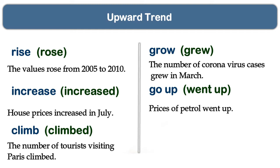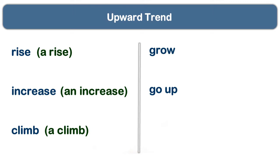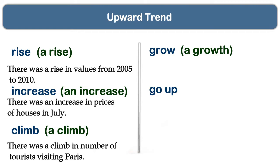You are not only required to write different words but you are also required to write sentences with different grammar structures. So the noun forms of these verbs are: arise → a rise, increase → an increase, climb → a climb, grow → a growth. Note that 'go up' does not have a noun form. Now let's use these noun forms to build sentences, starting with 'there.'